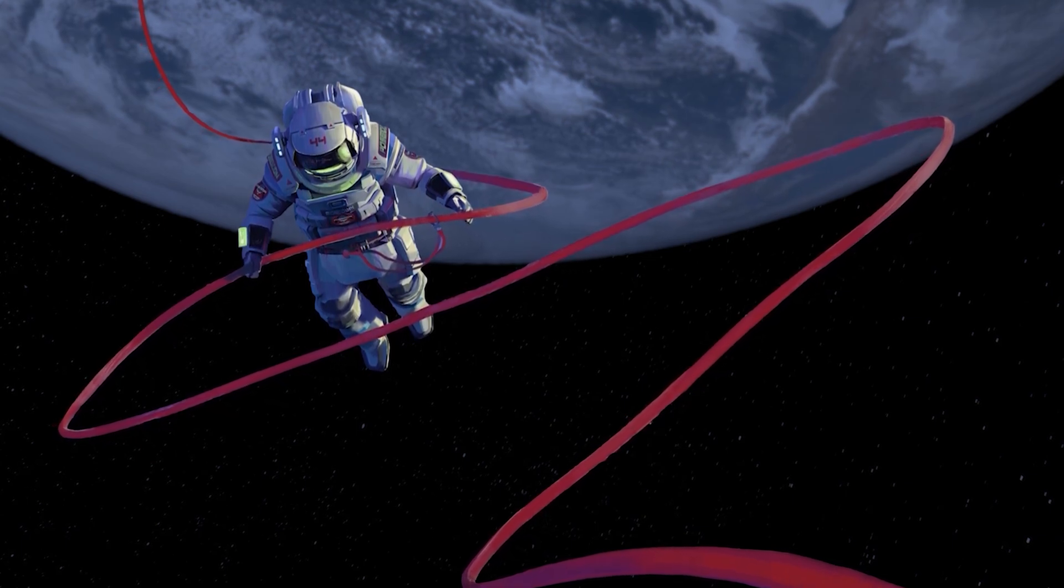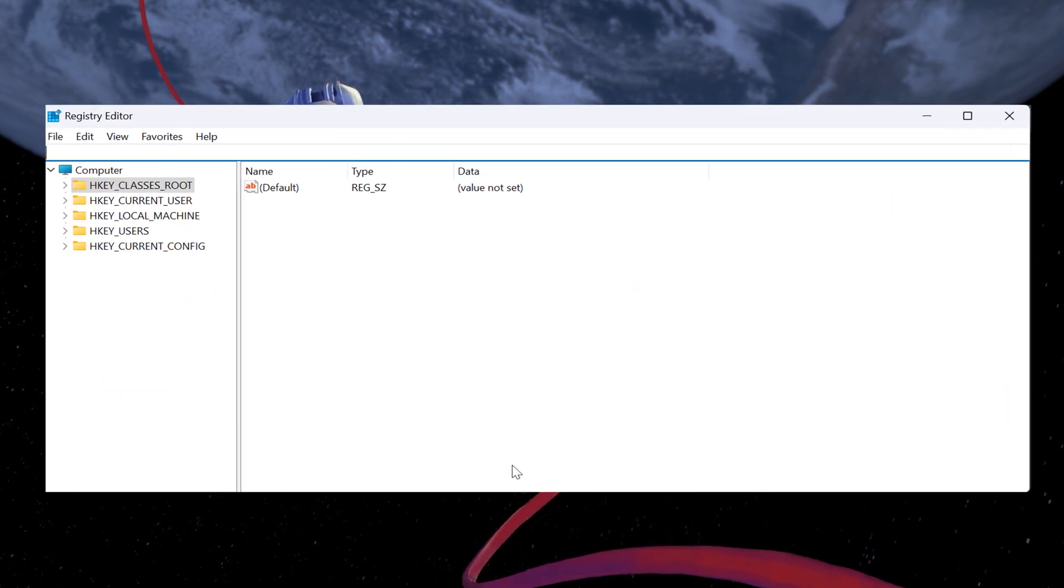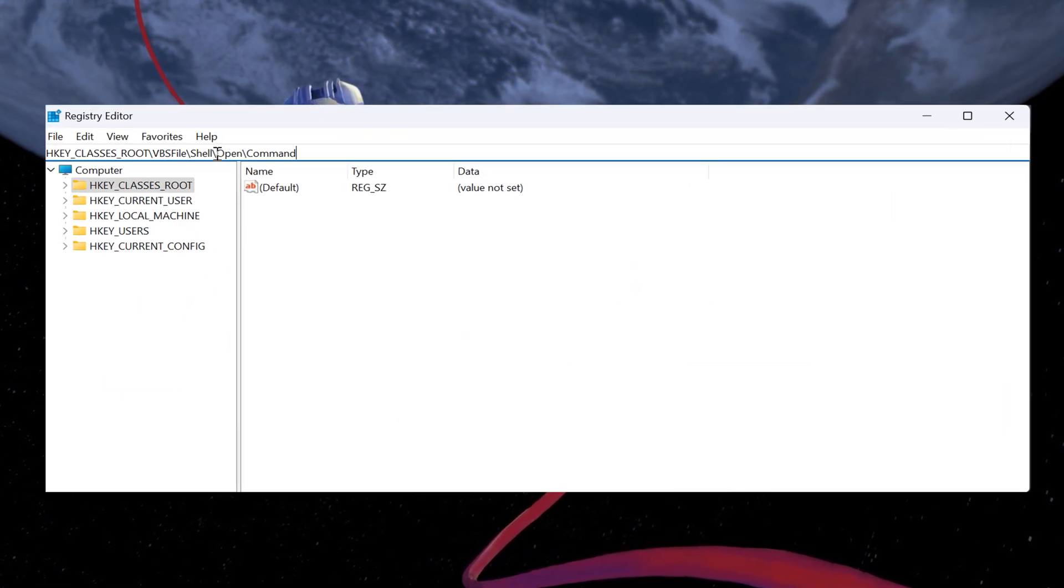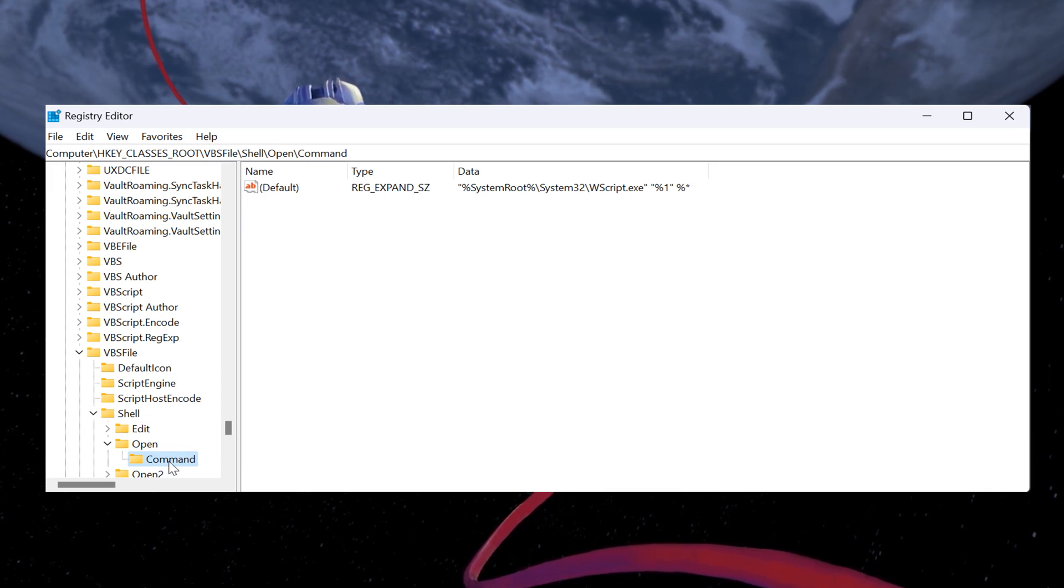Lastly, you'll have to change the default value for the VBS key. Open the Registry Editor once again. Navigate to the following path as you can see on the screen: HKEY Classes Root, VBS File, Shell, Open, Command.